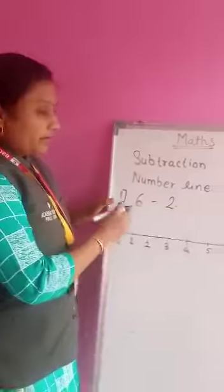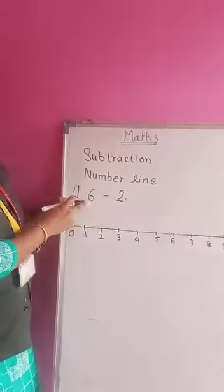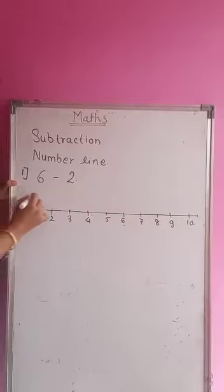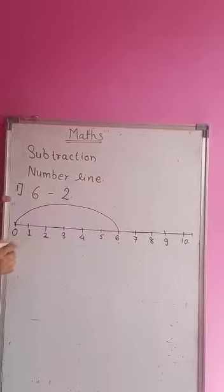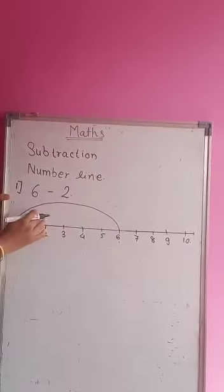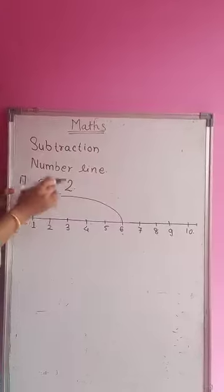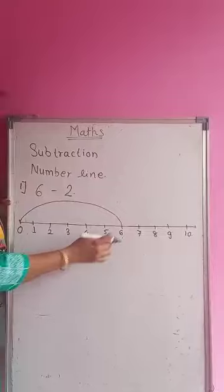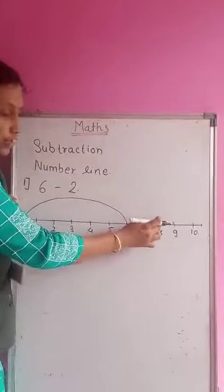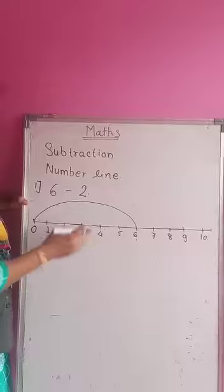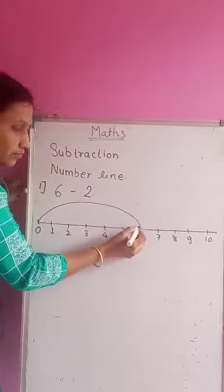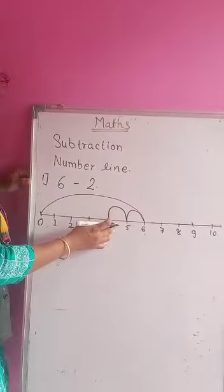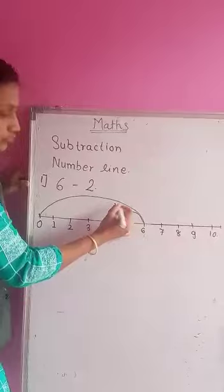First, find out the bigger number. The bigger number is 6. So jump on the 6. Take a long jump on the 6 and count backward because we have to subtract 2 from 6. In addition we count forward, but in subtraction we count backward. 1, 2. How many jumps do we have to do here? 2 jumps.